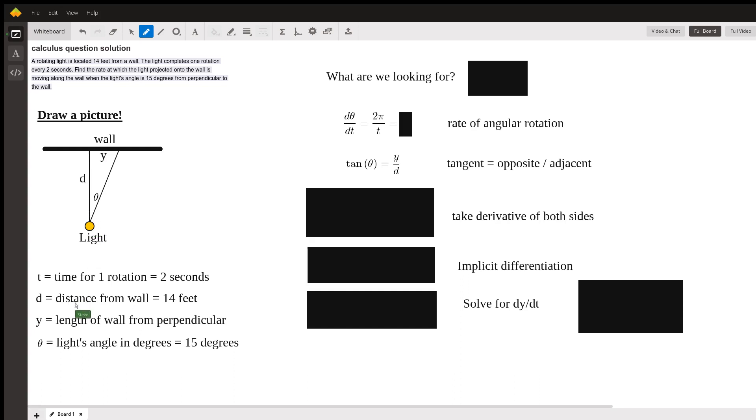I'm going to call that distance d from the wall, and d equals 14 feet. That's basically the first sentence. Next sentence, the light completes one rotation every two seconds. So there's a light basically doing this rotation and it's every two seconds, so t time for one rotation equals 2 seconds. We've defined t and d so far.